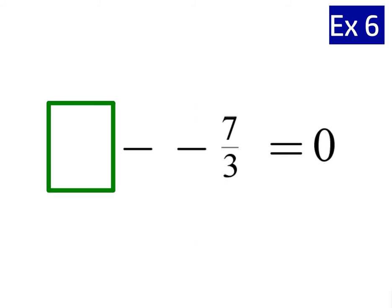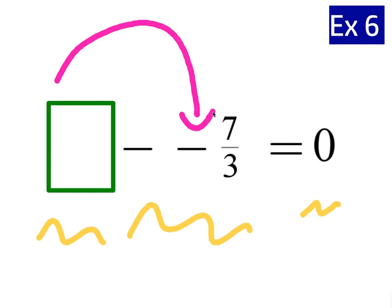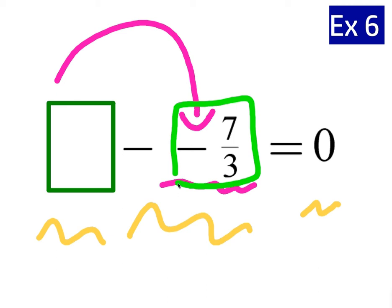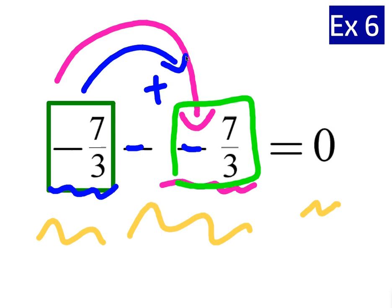What number minus negative 7 thirds is equal to 0? This is a little complicated, but you're subtracting negative 7 thirds, so you must have started with it. Look at what you're subtracting — the answer is negative 7 thirds. These two negatives in the middle turn into a positive, so we must have started at the left of the number line and moved right to end up at 0.